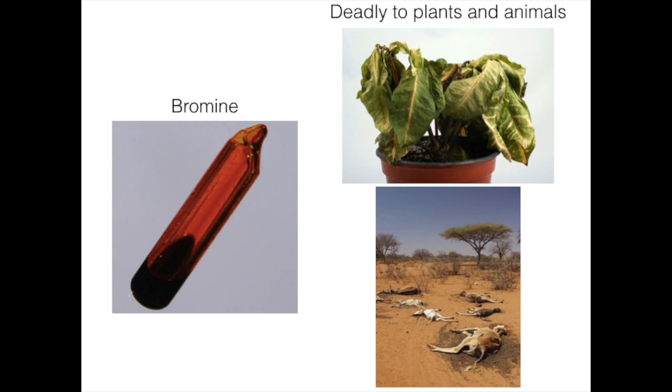Now for similarities. The similarities between the noble gases and halogens are that they both don't have allotropes, but every other element does. The last similarity they have is that they have little importance to organisms besides humans. In fact, they are very deadly to plants and animals.